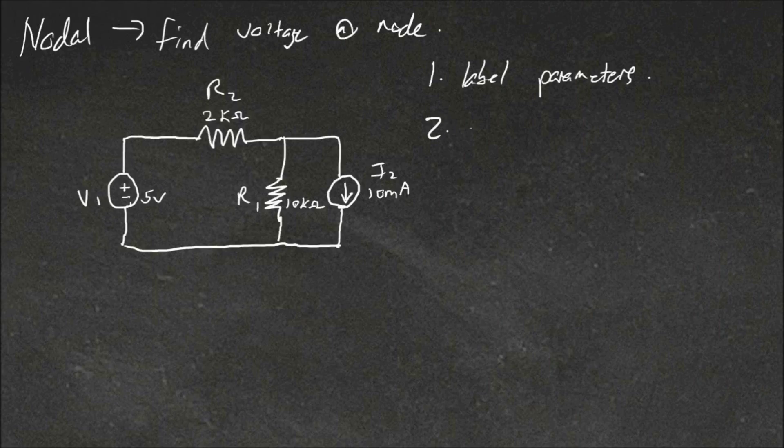Step 2 is to choose our reference voltage. So this is the voltage which is essentially ground. It's called a reference voltage or a common voltage. So we'll say this is our reference voltage and that's usually chosen to be the negative terminal of the supply.